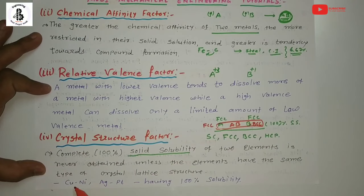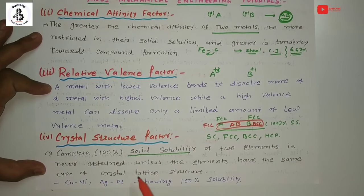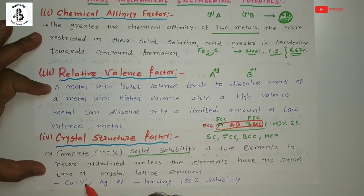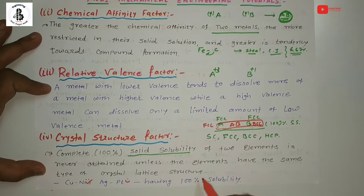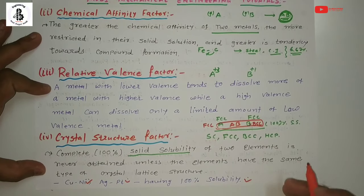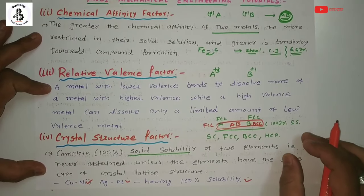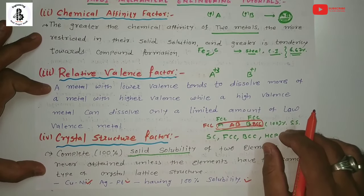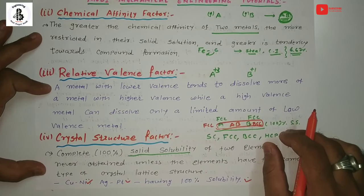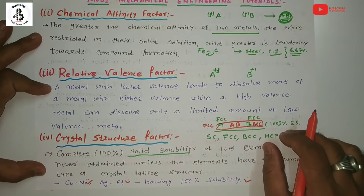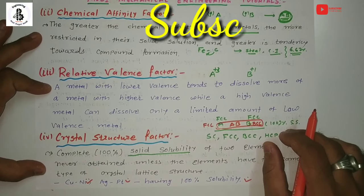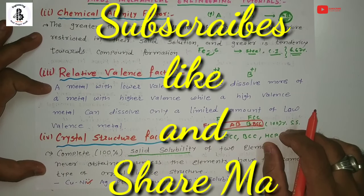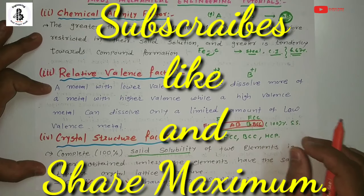For example, the copper-nickel system is a two-component system with 100% solubility. These are the main governing factors — the Hume-Rothery rules — for forming new solid solution materials. Understanding these rules is helpful for understanding phase diagrams. If you found this useful, please subscribe and share Modi Mechanical Engineering Tutorials. Thank you and keep watching.